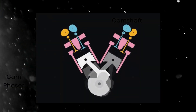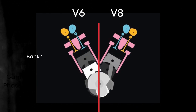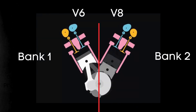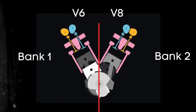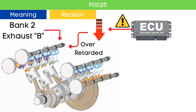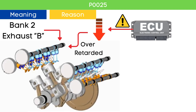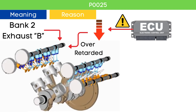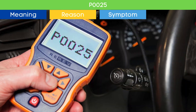In the case of V6 or V8 engines, there are two camshafts: bank 1 and bank 2. For dual overhead camshaft (DOHC) engines, there are two camshafts per bank — intake and exhaust. When the ECU detects that the bank 2 exhaust camshaft position is over-retarded compared to the targeted cam angle, it triggers the P0025 code.